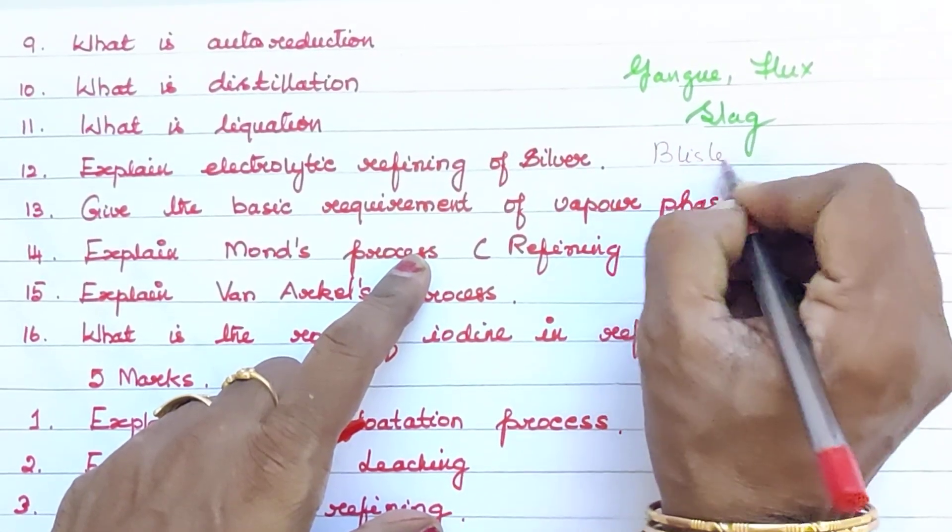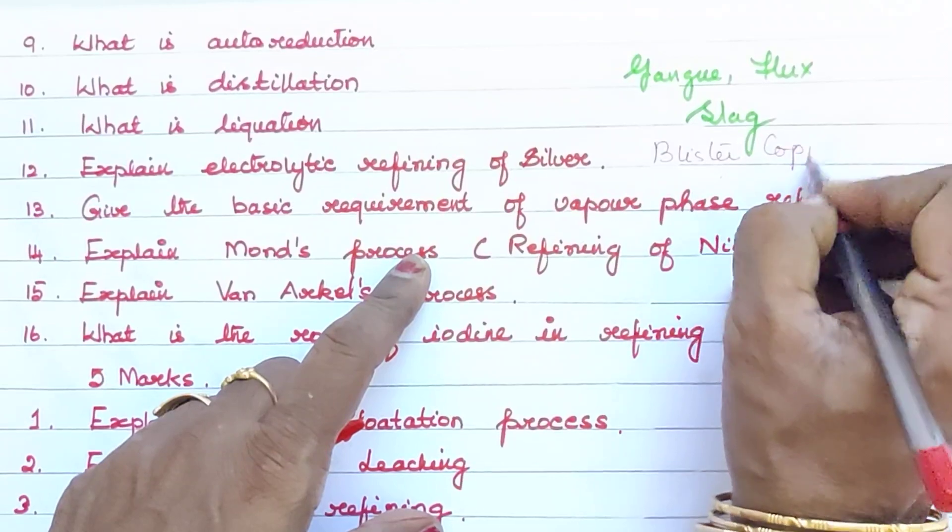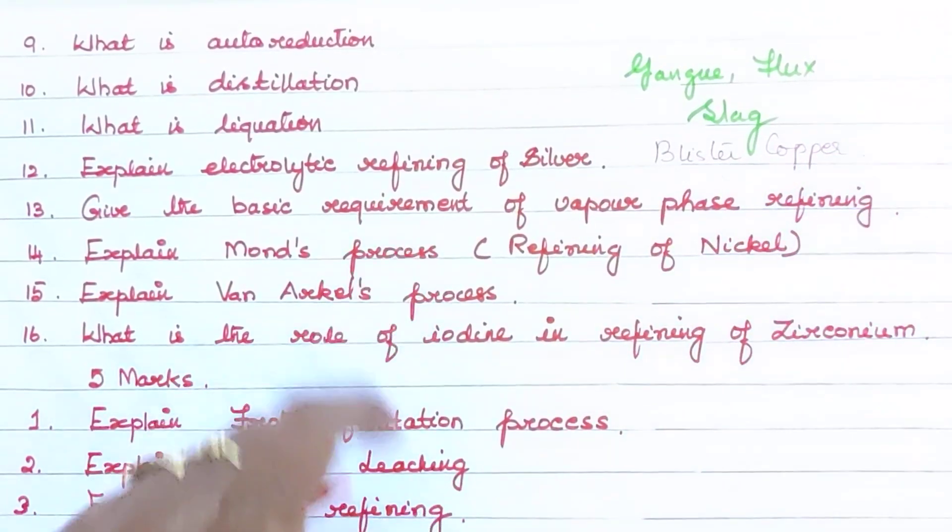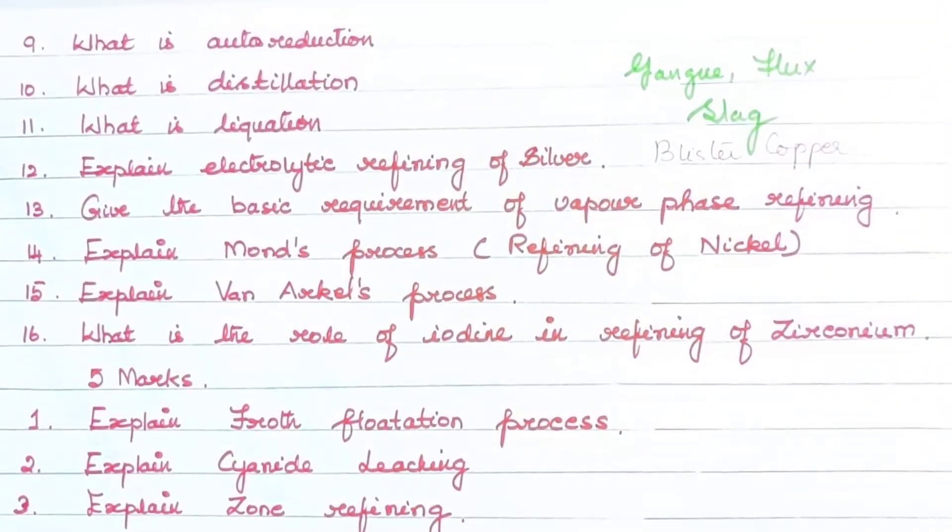You will find blister copper. What is blister copper? That question, you will find two marks. You will find a glance. Then, five marks.